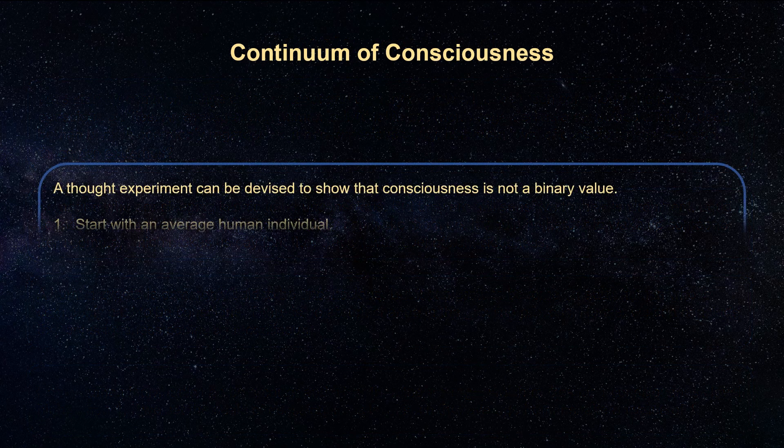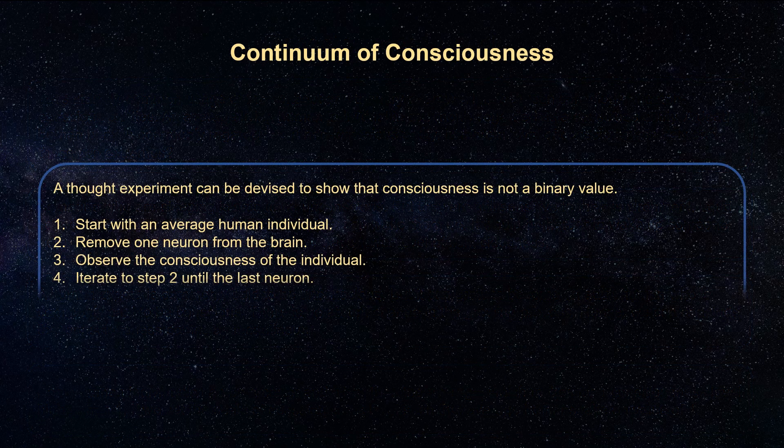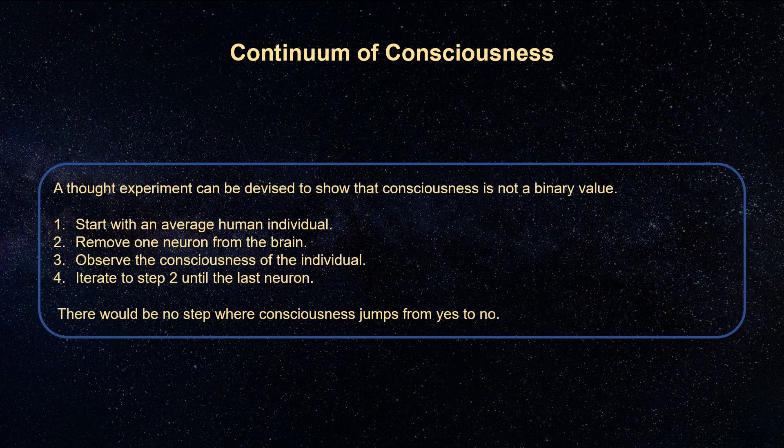A thought experiment can be devised to show that consciousness is not a binary value. Start with an average human individual. Remove one neuron from the brain. Observe the consciousness of the individual. Iterate this step until the last neuron is removed. There would be no step where consciousness jumps from yes to no.